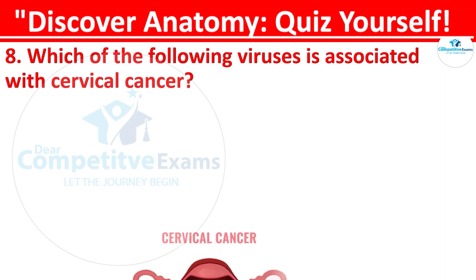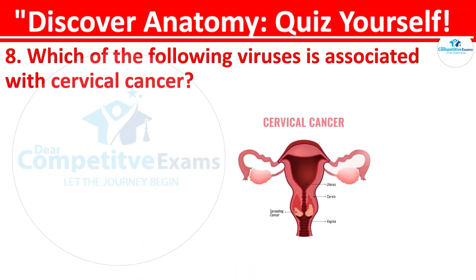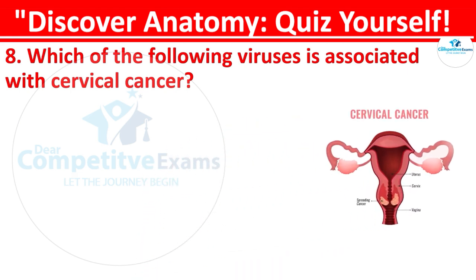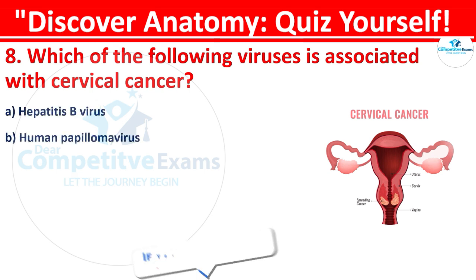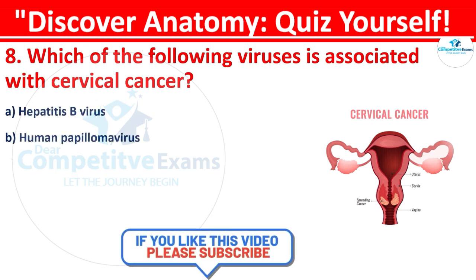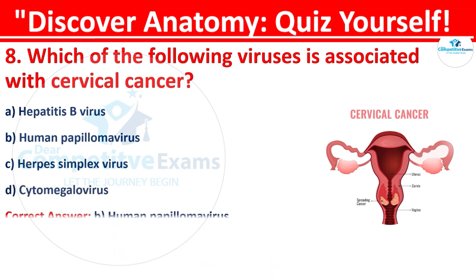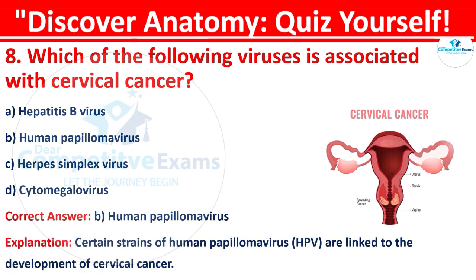Question 8: Which of the following viruses is associated with cervical cancer? The options are: Hepatitis B virus, Human Papillomavirus, Herpes Simplex virus, or Cytomegalovirus. The correct answer is B, that is Human Papillomavirus. Certain strains of Human Papillomavirus (HPV) are linked to the development of cervical cancer.